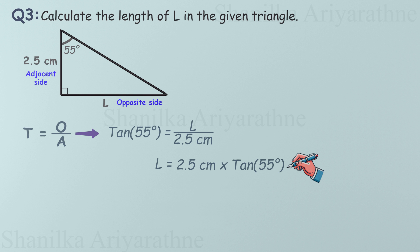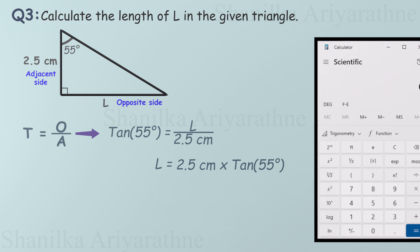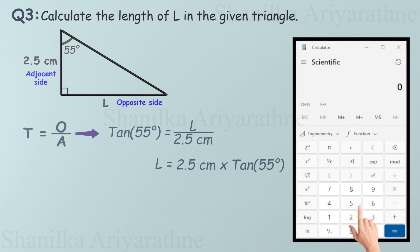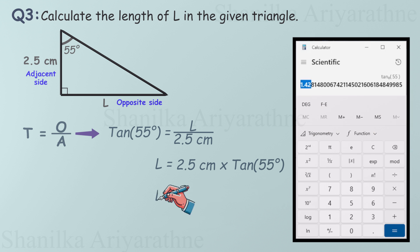Now, let's use the calculator. First, type 55, then press the tangent button. The tangent of 55 degrees is 1.42. Now multiply. 2.5 times 1.42, which gives us 3.55 centimeters. The length of L is 3.55 centimeters.